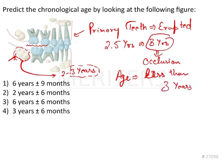Looking at the options, since the age has to be less than 3 years because occlusion has not been attained and the crown has not been formed, we will go with 2 years plus minus 6 months as the correct answer.